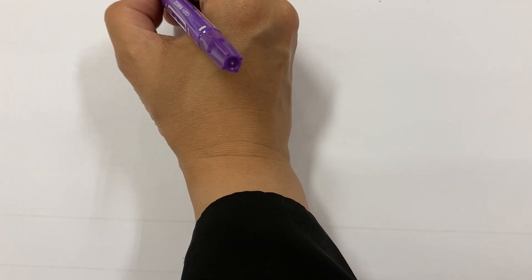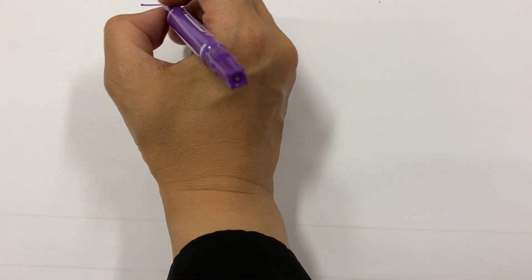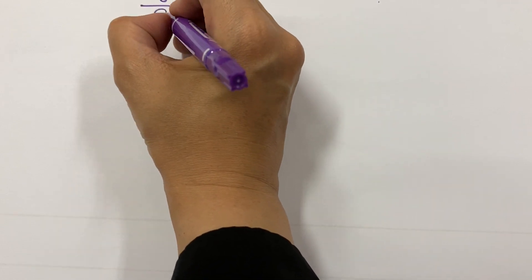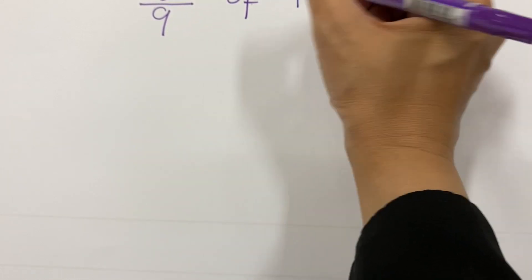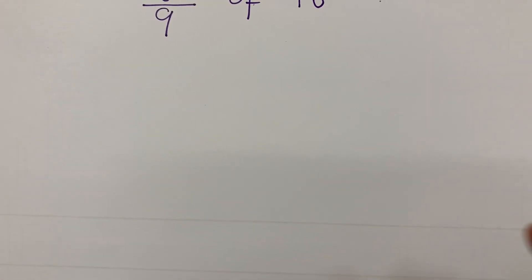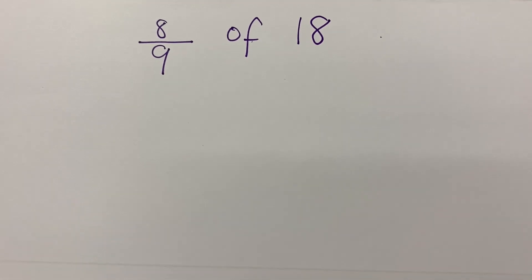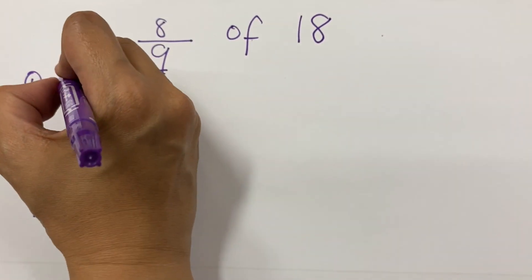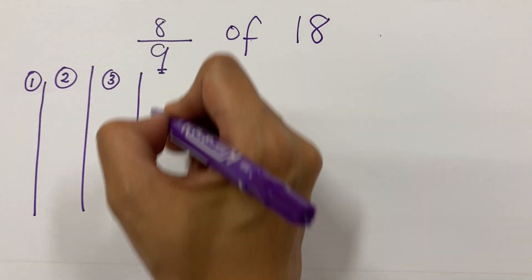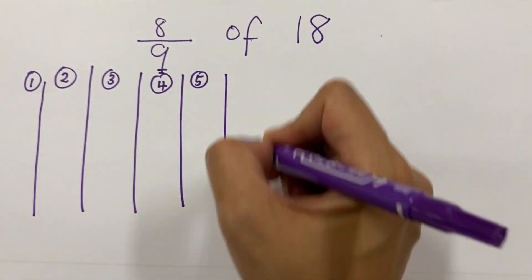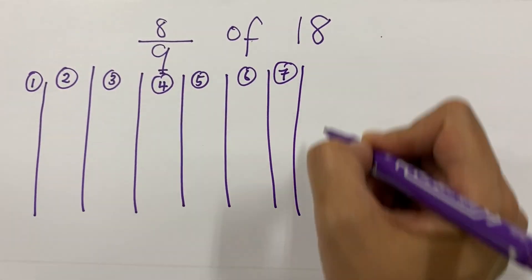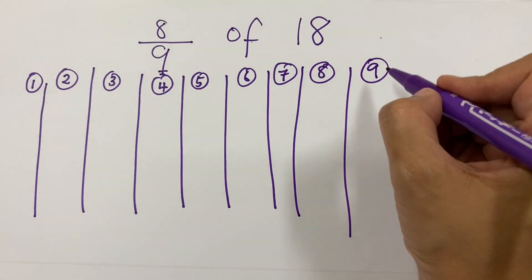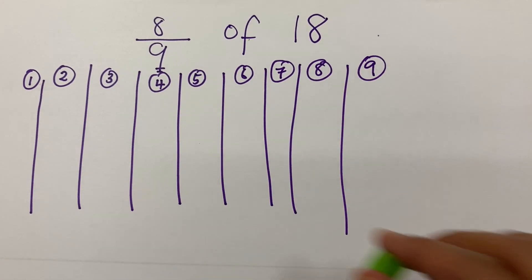Let's do one more. The question states eight-ninths of 18. You have 16 cubes, so add two more. Eight out of nine of 18 — put in your columns: nine columns, that's two, three, four, five, six, seven, eight, and nine. You have your nine columns drawn, so put in your cubes.